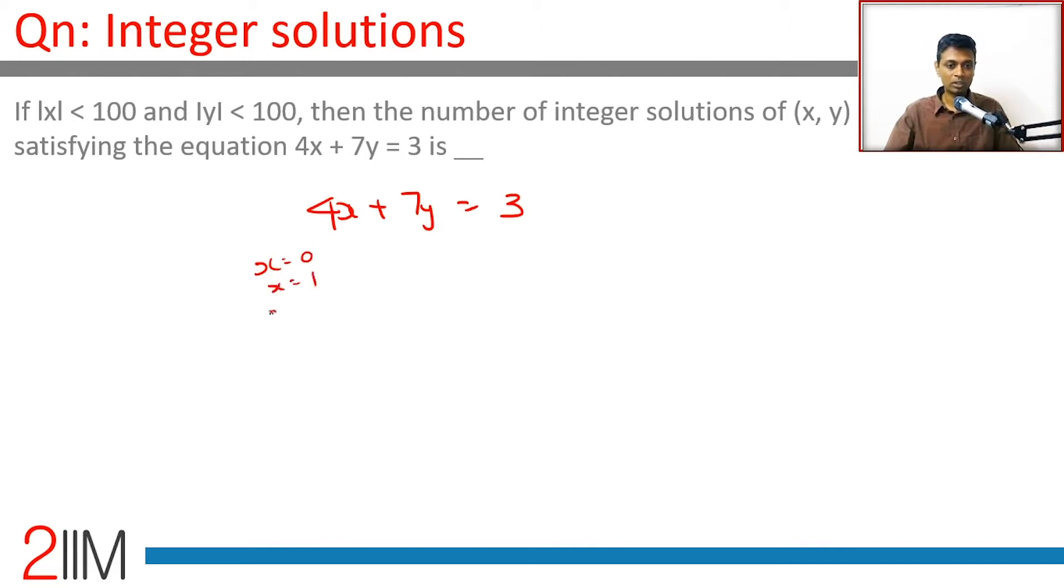See whether y becomes an integer and then let's go with that. x equal to 0: 7y is 3, does not work. x equal to 1: 4 plus 7y is 3, does not work. x equals 2: 8 plus 7y is 3, does not work. 7y equals 3 minus 4x.